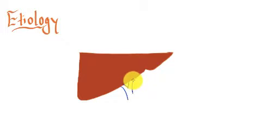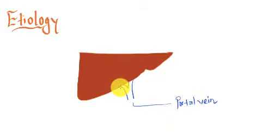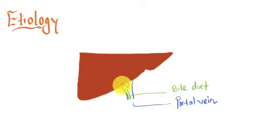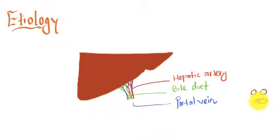Talking about the etiology of pyogenic liver abscess, the infection to the liver can enter through three routes. One of them is portal vein, the second one is bile duct, and the third route is through hepatic artery. In this figure you can see the portal vein posteriorly, bile duct anteriorly and to the right, and hepatic artery towards the middle and anterior.